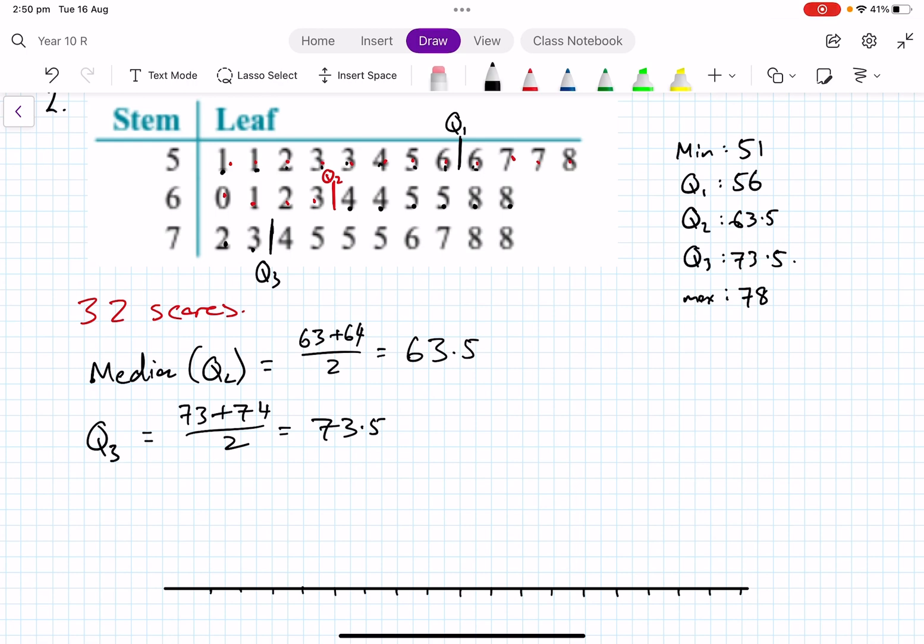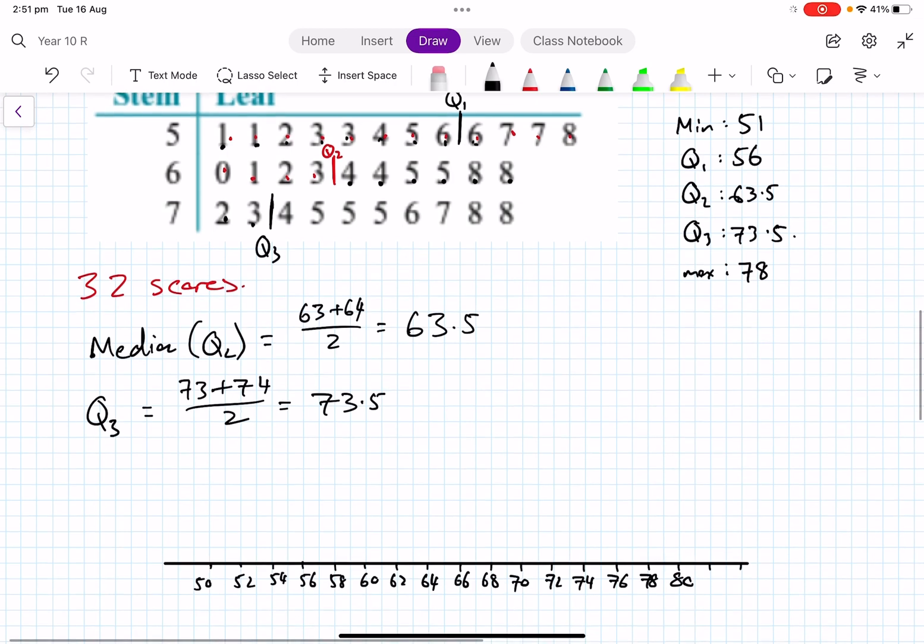So I might need to just do it accordingly. I'm going to start with 50, 52, 54, 56, 58, 60, 62, 64, 66, 68, 70, 72, 74, 76, 78, 80. So we get all the way across. We've got all our numbers, nice even scale.